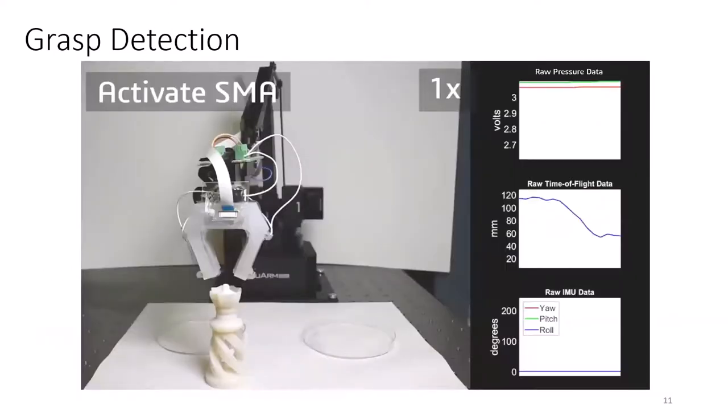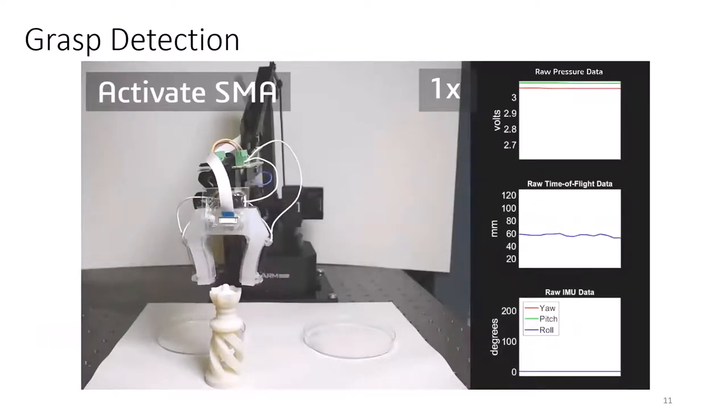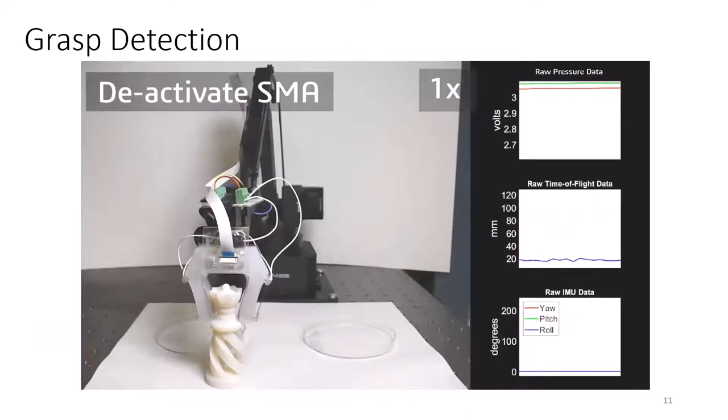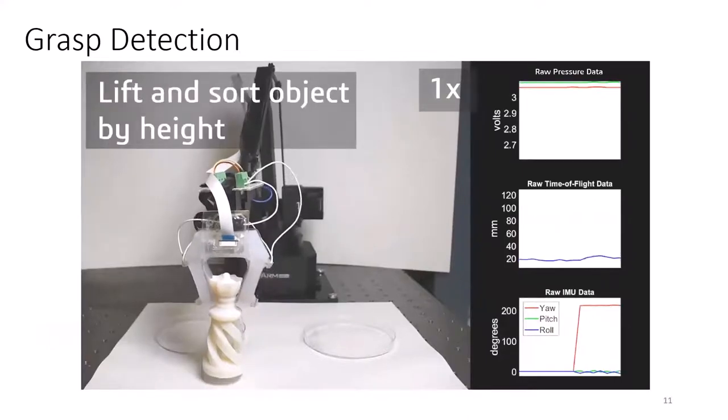For grasp detection, all three sensor modalities are used. The pressure sensors on the inner fingertips and the corresponding plot are outlined in orange. And the IMU and the corresponding plot is in green. It's hidden behind the white cable at this angle. In this demo, the system has located the object in the workspace and will attempt to grasp it. The SMA springs are activated by applying current, and after detecting a successful grasp, the object is transported to the target location and is then released.